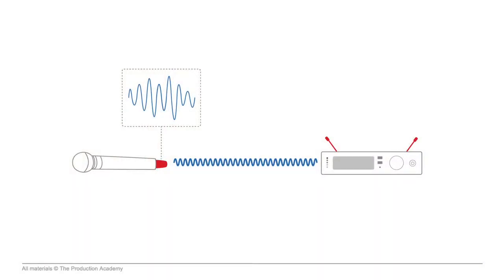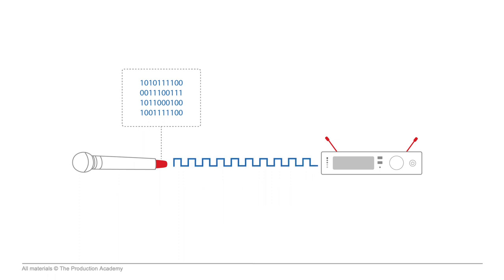Analog systems use the constantly varying nature of an audio signal to modulate the radio wave. However, digital systems first use an A-to-D converter to turn the audio signal into ones and zeros. Then they modulate the radio wave in a binary way by switching back and forth between two values, or sometimes more in some modulation schemes. With both analog and digital, we are still using the carrier wave to transmit audio information — it's just how we modulate that wave that changes.